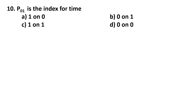Question number 10. P01 is the index for the time period: 1 on 0, 0 on 1, 1 on 1, or 0 on 0. P01 is the index for time period 1 on 0, meaning 0 is the base and 1 is the current period.